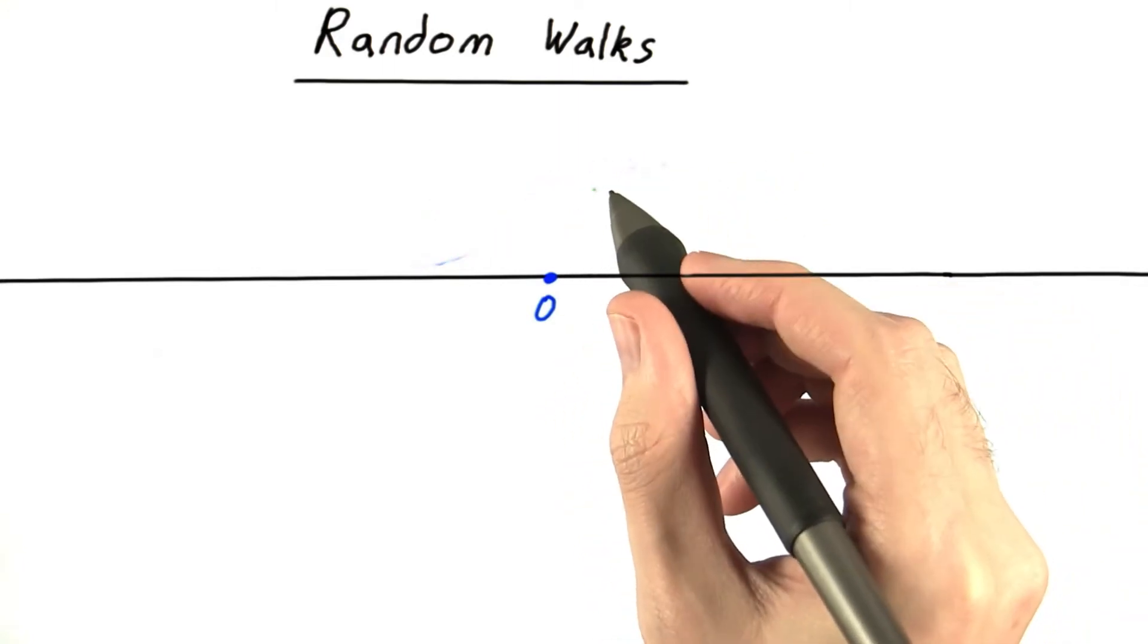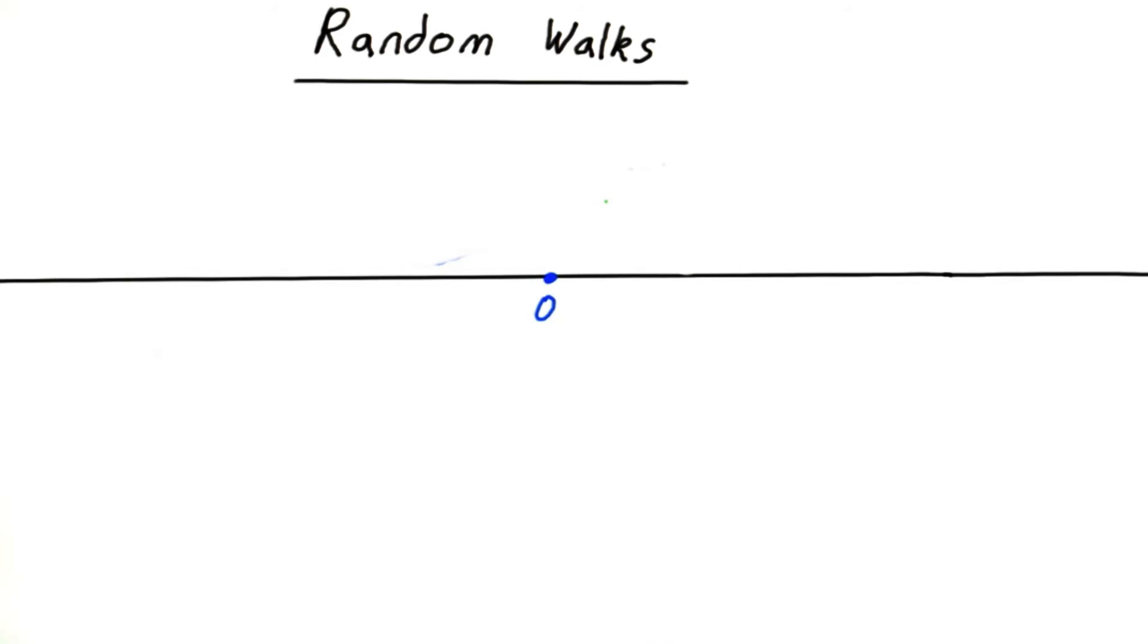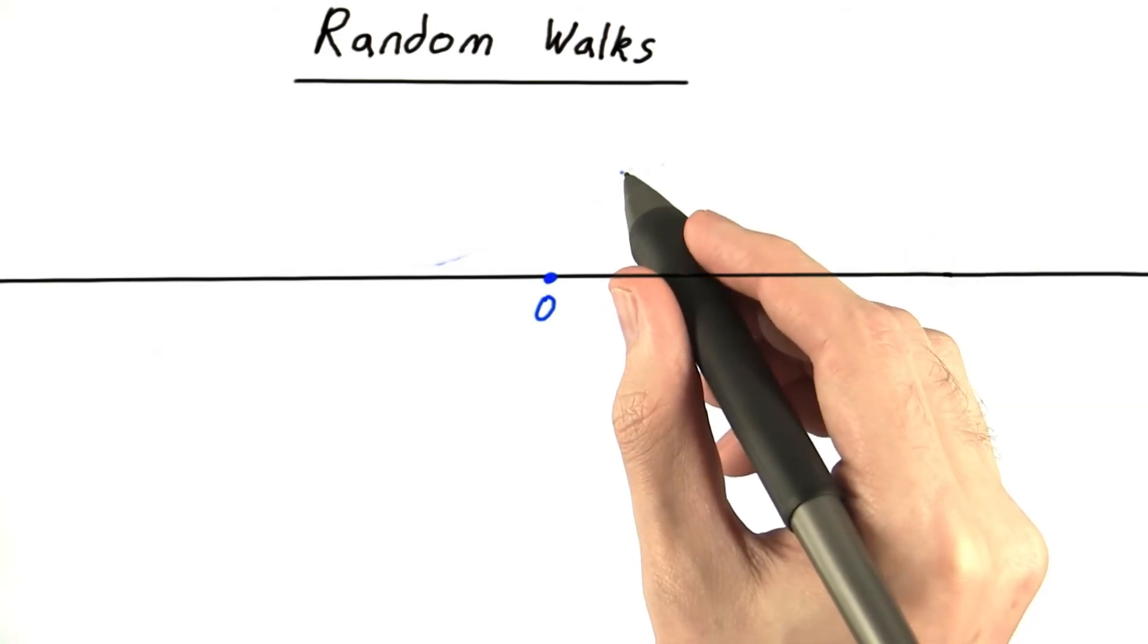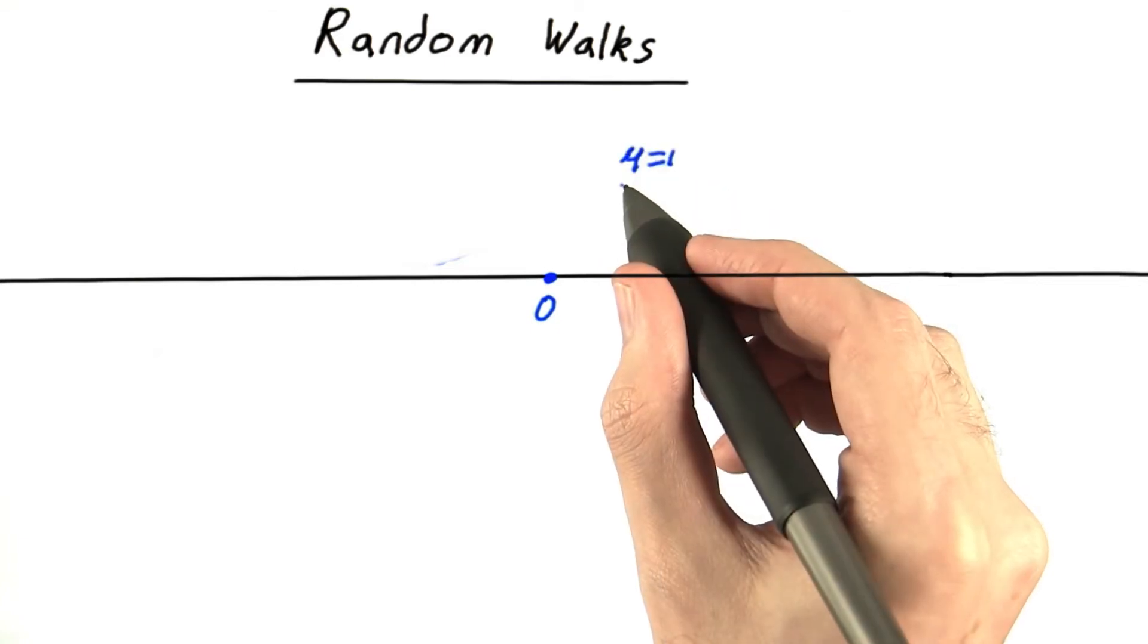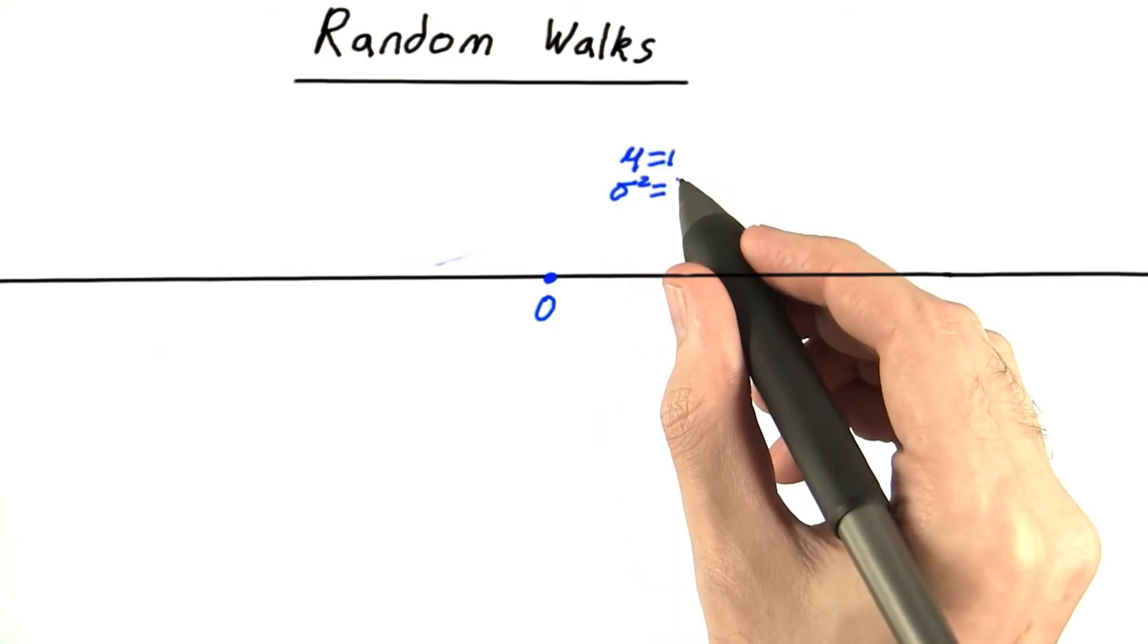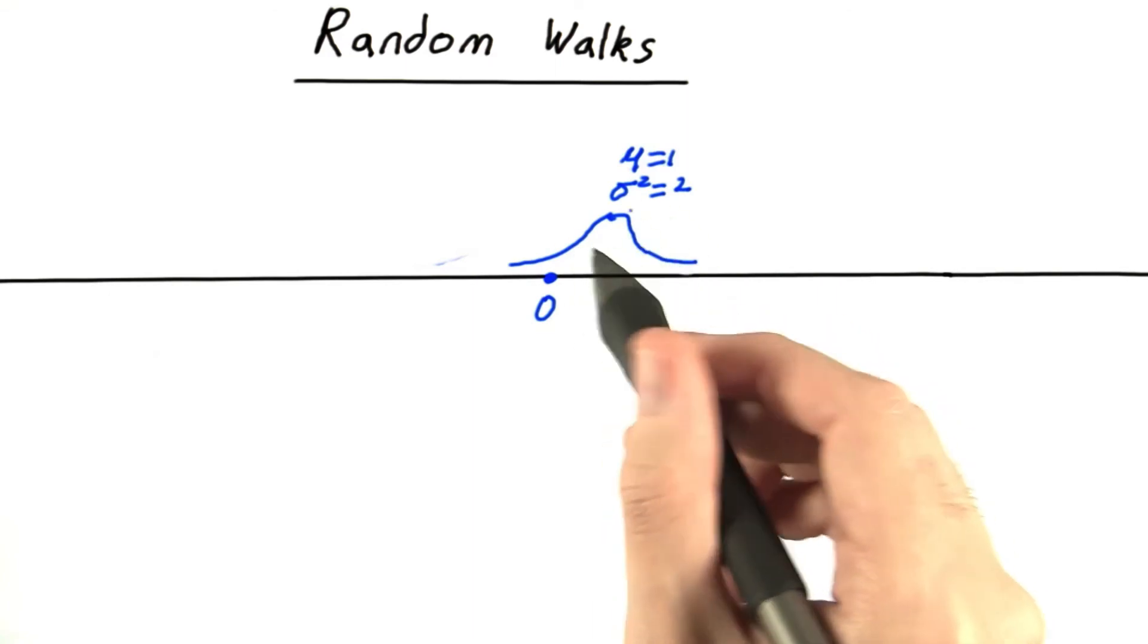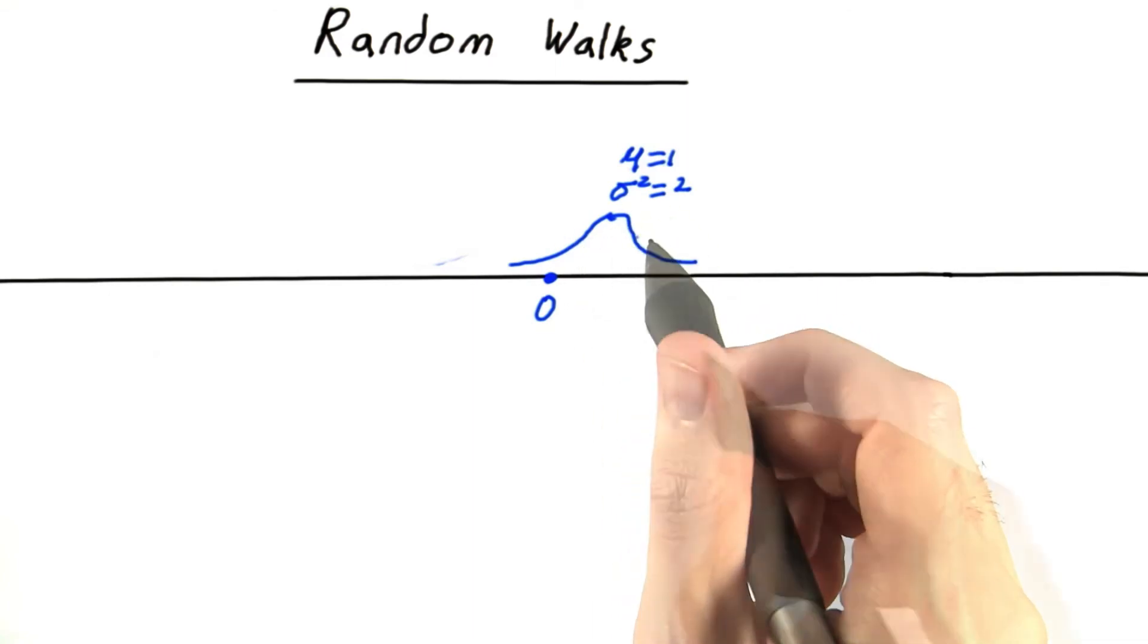In this case, we're going to have it drift to the right. Specifically, we'll say that it now has a mean of 1 and a variance of 2. Apologize in advance, I'm sure my drawing isn't quite to scale.